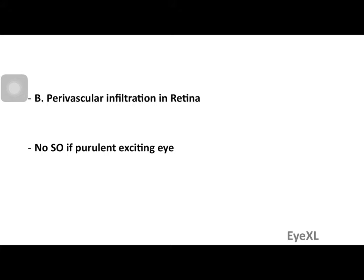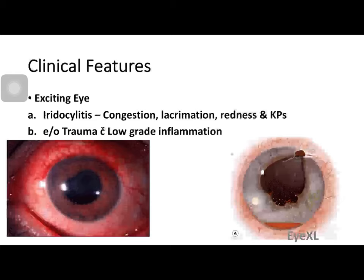Another pathological change is perivascular infiltration in the retina. Interestingly, if the exciting eye shows purulence — meaning pus has formed, resulting in endophthalmitis or panophthalmitis — that eye will not produce sympathetic ophthalmitis in the other eye. This is because the uveal tissue is so extensively damaged that it cannot incite an autoimmune response. This is not a hard-and-fast rule, but it is very often observed that when purulence is present, sympathetic ophthalmitis does not occur in the fellow eye.